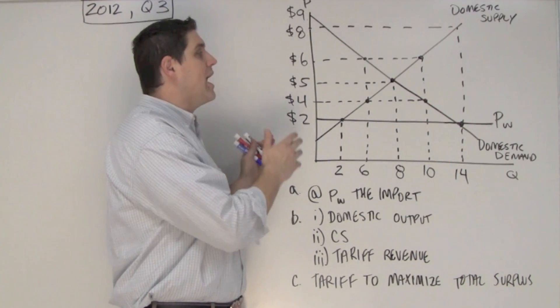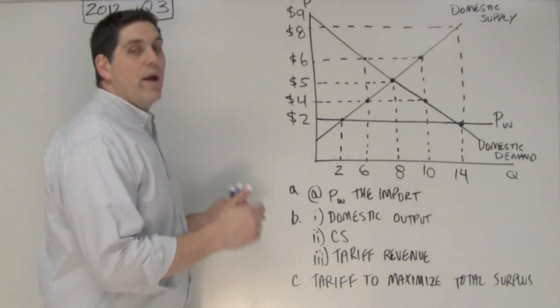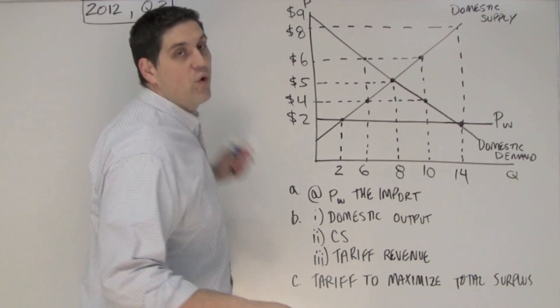An AP test asks these trade and tariff questions about 7% to 10% of the time. This is from the Microeconomics Exam 2012, Question 3.